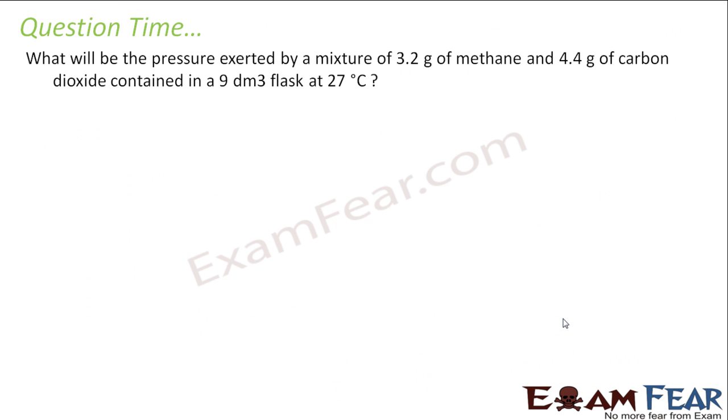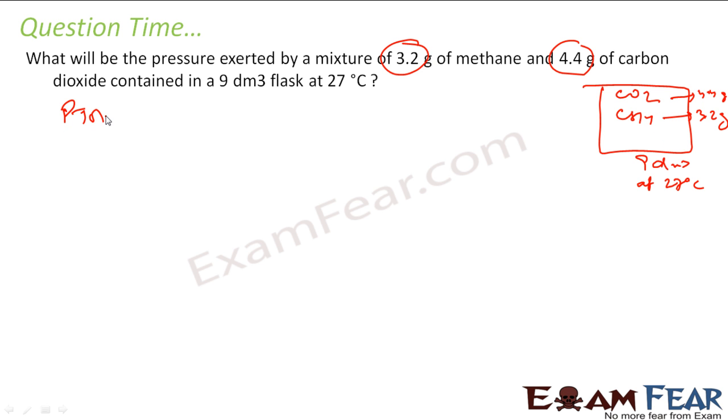So the question says what would be the pressure exerted by 3.2 gram of methane and 4.4 gram of carbon dioxide in a flask, that is volume of the flask is 9 dm³ at 27°C. So it has carbon dioxide and methane, it has methane as 3.2 gram and carbon dioxide as 4.4. They will not react, since they will not react, the pressure total will be nothing but the partial pressure by methane plus partial pressure by carbon dioxide.